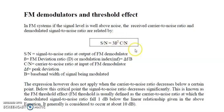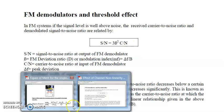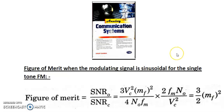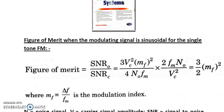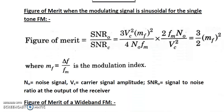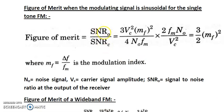To understand this better, we first need to understand the term 'figure of merit.' With reference to the book Analog Communication System by Sanjay Sharma, figure of merit is defined as the ratio of signal-to-noise ratio at the output of the receiver to signal-to-noise ratio at the input of the receiver.